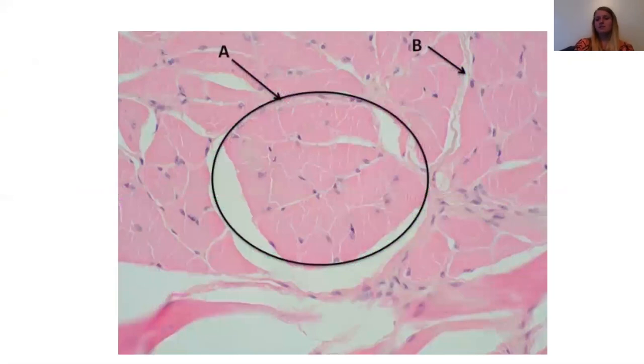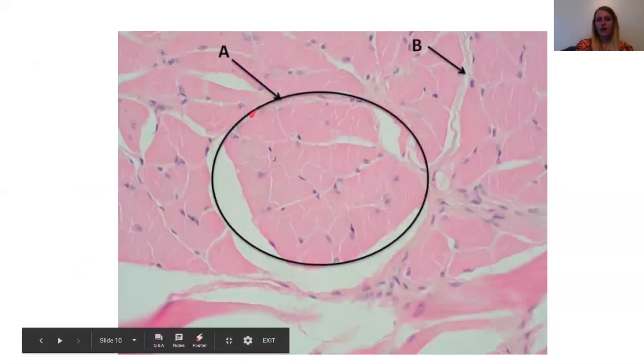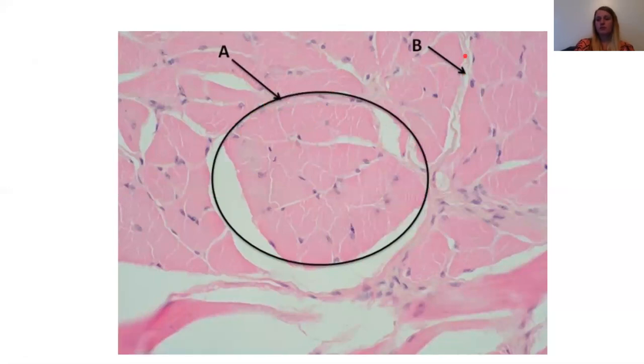Same thing on this. If they want the fascicle, they will put a circle around it. And if they want a different layer, like a perimysium in this example, they will just put an arrow. So perimysium is around that fascicle.